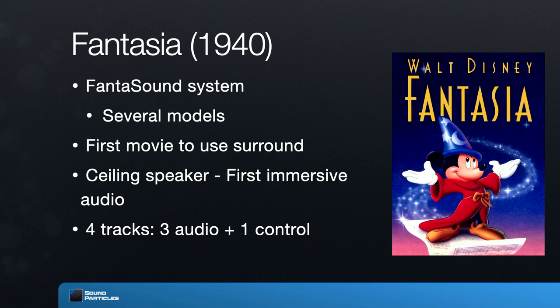Looking at how Fantasound was implemented: they used a four-track recorder. The first three tracks carried audio, and the fourth track held a control system that allowed the system to matrix and route sound to the speakers. For instance, at one point the first track goes to the left and the second to the right, but later the first track is sent to the front and the second to the back. From my point of view, this was also the first movie to use object-based audio concepts — independent channels distributed separately with metadata controlling where each sound should be positioned — all in analog, 80 years before Dolby Atmos.